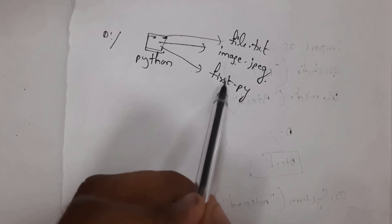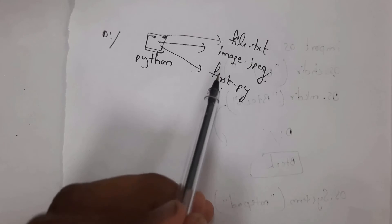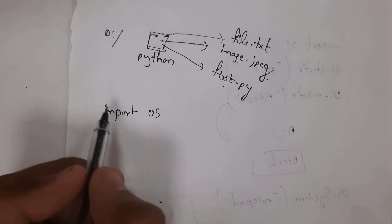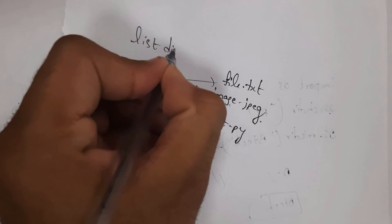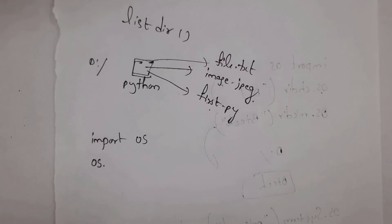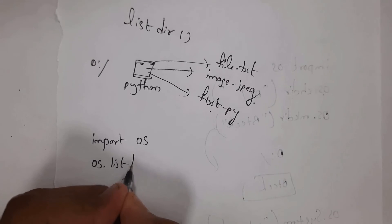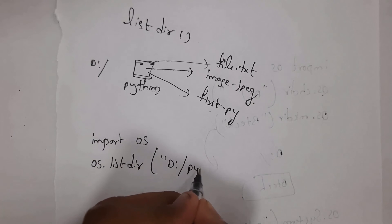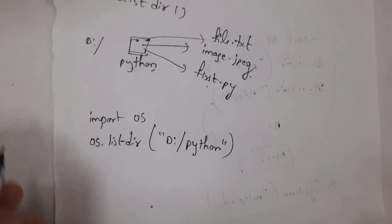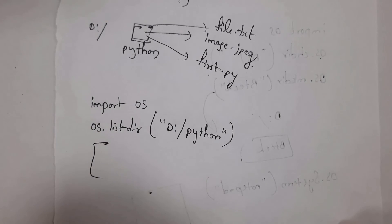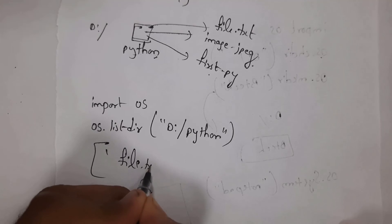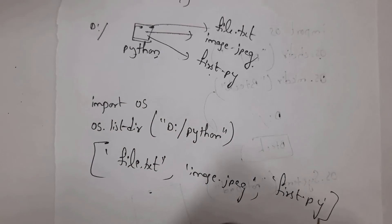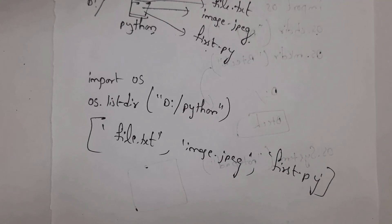Consider a folder named 'python' in local disk D that contains three files: 'file.txt' (a text file), 'img.jpeg' (an image), and 'first.py' (a Python file). To check what files are present inside this folder using the os module, write 'import os', then 'os.listdir("D:\\python")'. The listdir function displays all files in the folder. The output will be in the form of a list: ['file.txt', 'image.jpeg', 'first.py'].